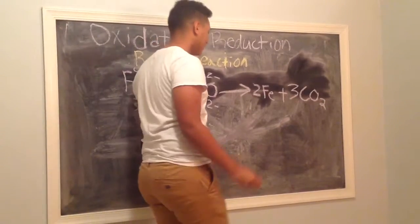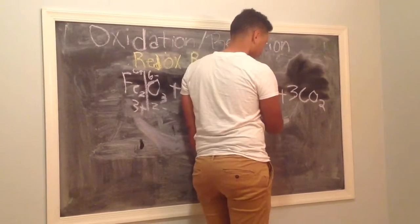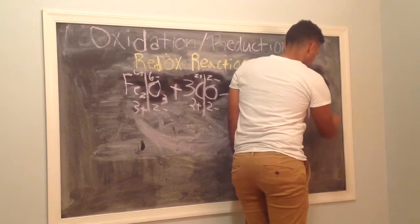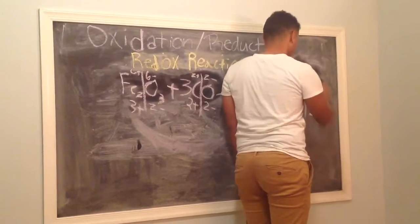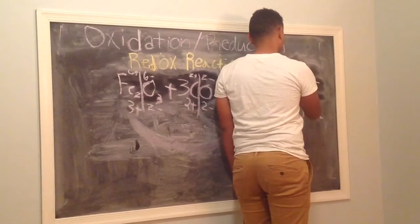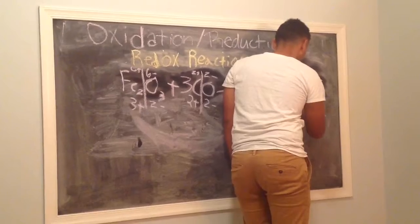Now, for the product side, iron is going to have no charge. And for this one, we're going to carve it up again. And 2 minus charge, 2 plus 2, 2 times 2 is 4 minus, 4 plus, and the carbon is going to end up having a 4 plus charge.